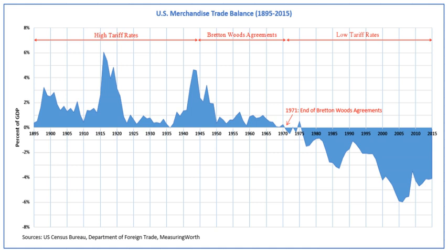However, increased government intervention in domestic economy brought with it isolationist sentiment that had a profoundly negative effect on international economics. The priority of national goals, independent national action in the interwar period, and the failure to perceive that those national goals could not be realized without some form of international collaboration — all resulted in 'beggar thy neighbor' policies such as high tariffs, competitive devaluations that contributed to the breakdown of the gold-based international monetary system, domestic political instability, and international war.